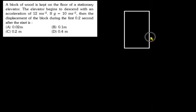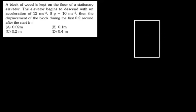First I will make an elevator. This is the elevator. This is descent — descent means that it is coming down, it will go down. This elevator is descending in the downward direction with an acceleration of 12 m per second square.